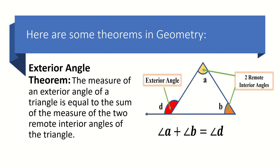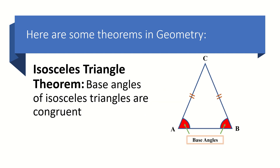Next, the exterior angle theorem states that the measure of an exterior angle of a triangle is equal to the sum of the measures of the two remote interior angles of the triangle. This theorem will be discussed in detail in a different episode. And lastly, the isosceles triangle theorem states that the base angles of isosceles triangles are congruent — we have base angles angle A and angle B. This list is not yet complete since there are still other definitions, postulates, and theorems in the succeeding lessons.